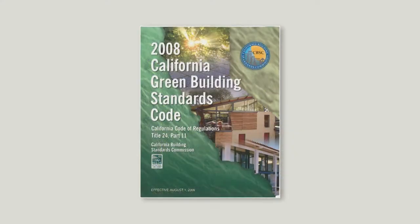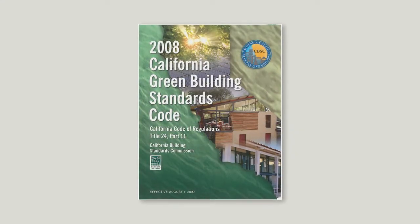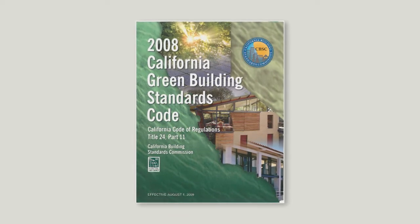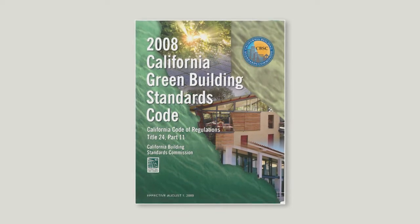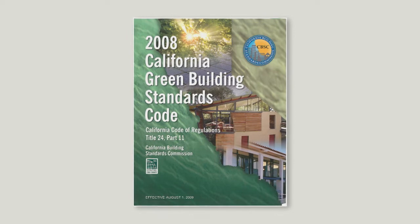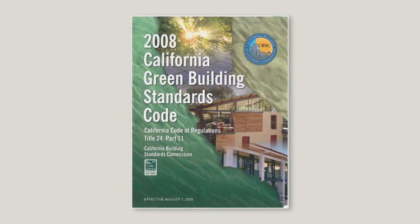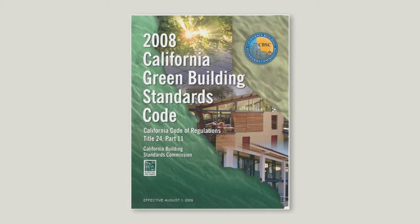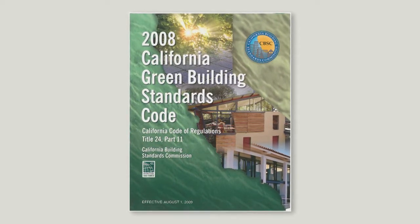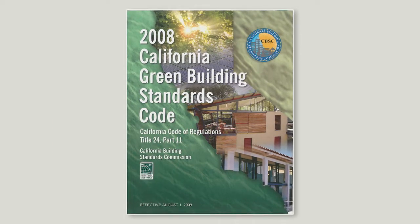The first edition of Cal Green contained only voluntary measures and was published in 2008 with an effective date of August 2009. It established the administration, definitions, and green building chapters, and created five key divisions for sustainable design.